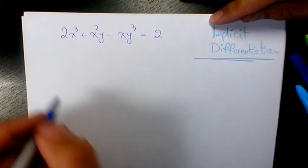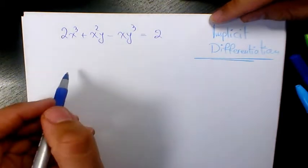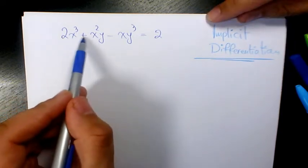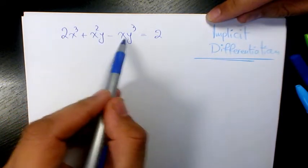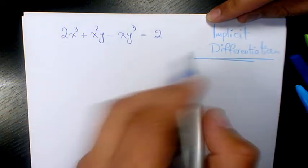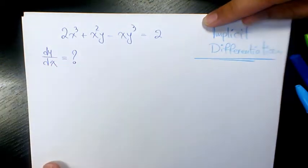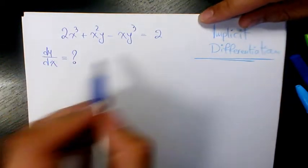What's up guys, this is Massey, welcome to another video. In this video I want to show you how to find the derivative of this expression: 2x³ + x²y - xy³ = 2. We need to use implicit differentiation to find dy/dx.